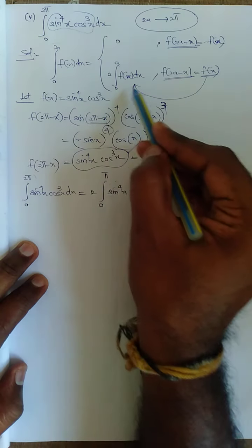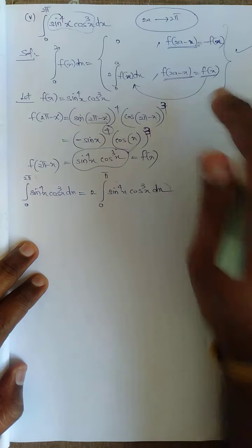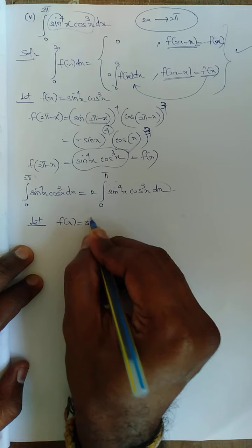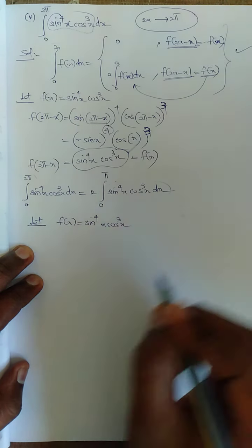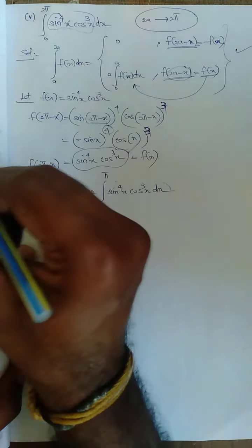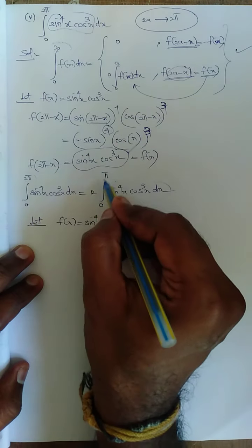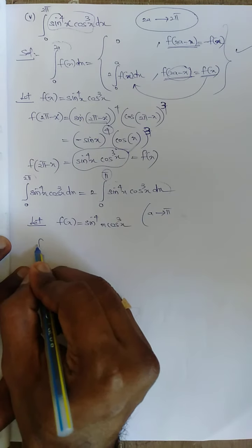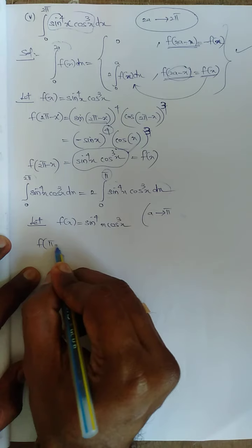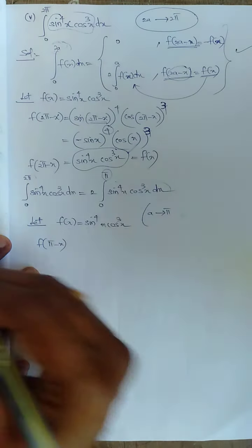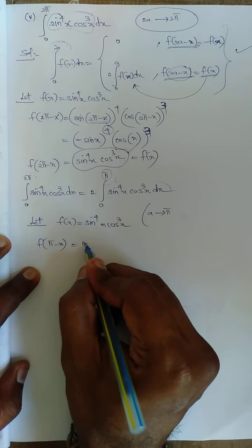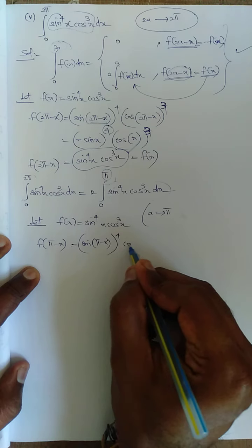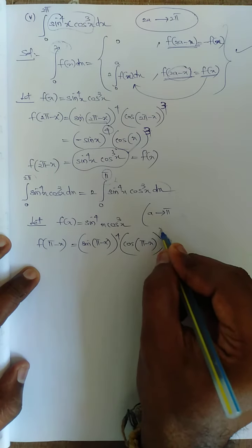I am going to use the same property once again. Let f(x) = sin⁴x · cos³x, and now 2a - x becomes π - x, since the limit here is π, meaning a = π. So we compute f(π - x): sin(π - x) to power 4, and cos(π - x) to power cube.